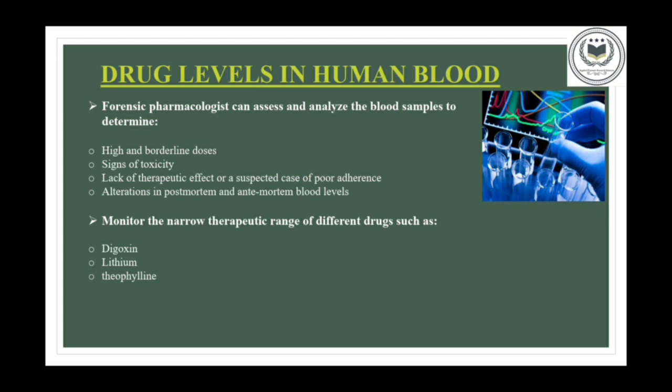Now we come to drug levels in human blood. Pharmacologists can examine blood samples to determine whether a human body is having a high and borderline dose, signs of toxicity, lack of therapeutic effect, or a suspected case of poor adherence, and alterations in both post-mortem and ante-mortem blood levels. Next, it is also used to monitor the narrow therapeutic range of different drugs such as digoxin, lithium, and theophylline.